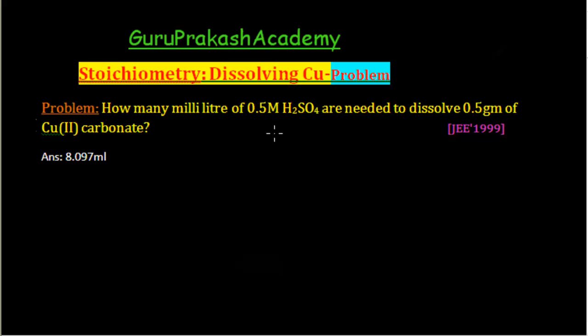This problem covers the concept of writing balanced equations. The question is, how many milliliters of 0.5 M H2SO4 are needed to dissolve 0.5 grams of copper(II) carbonate, CuCO3?